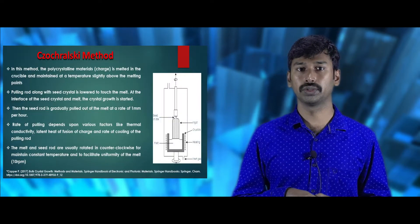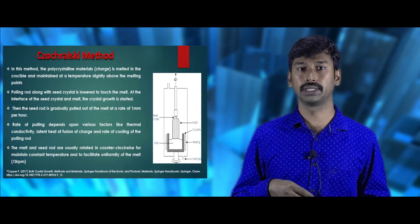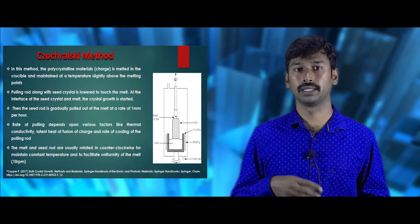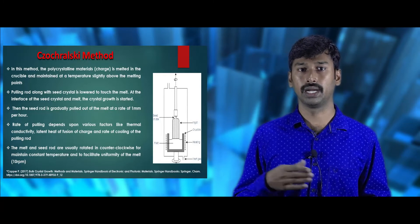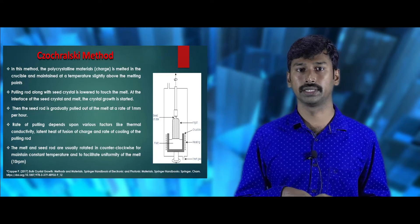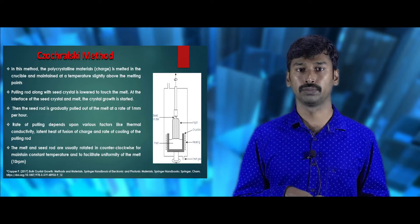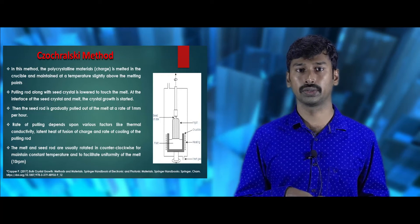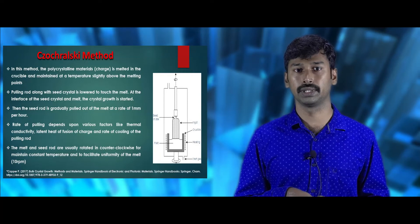For the Czochralski growth procedure, initially the polycrystalline materials are melted in a crucible and maintained at a temperature slightly above the melting point. Then the pulling rod with seed crystals is lowered and touches the melt. At the interface of the seed crystals and the melt, growth is initiated. Then the seed rod is pulled out from the melt at a rate of 1 mm per hour.